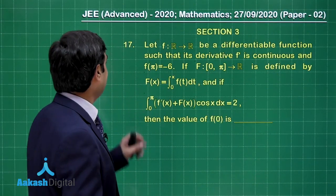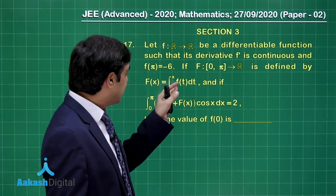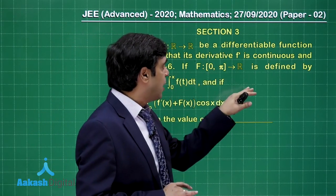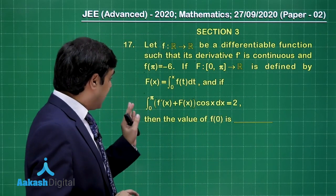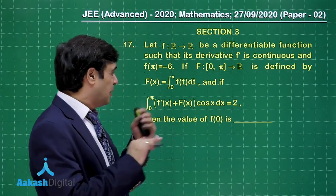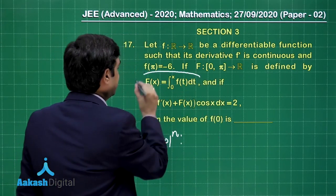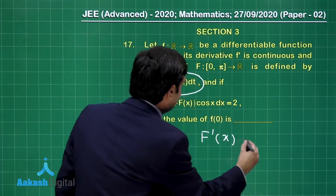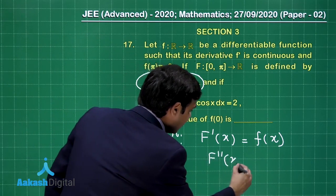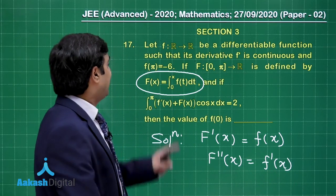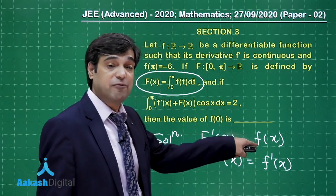Moving on to question number 17. Let f be a differentiable function such that its derivative f' is continuous and f(π) = −6. Capital F, defined from [0,π] to ℝ by F(x) = ∫₀ˣ f(t) dt. Differentiating this equation gives F'(x) = f(x). Taking the second derivative gives F''(x) = f'(x). Since f(π) = −6, putting x = π gives F''(π) = f'(π) = f(π) = −6.